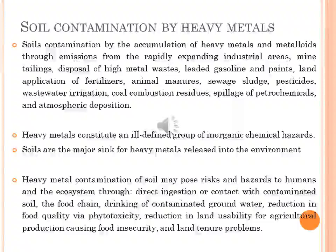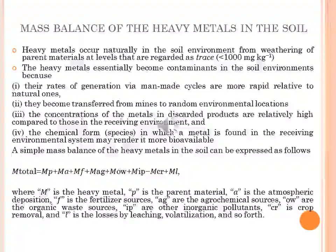Risks include drinking of contaminated ground water, reduction in food quality, safety and marketability via phytotoxicity, reduction in land usability for agricultural production causing food insecurity. Heavy metals occur naturally in the soil environment from geogenetic processes of weathering of parent materials at levels that are regarded as traces and rarely toxic. However, most soils of rural and urban environments may accumulate one or more heavy metals above defined background values high enough to cause risk to human health.